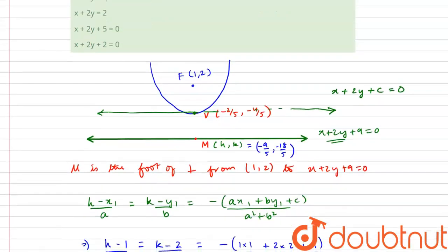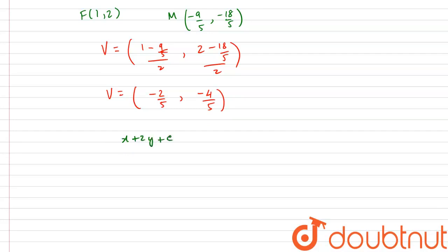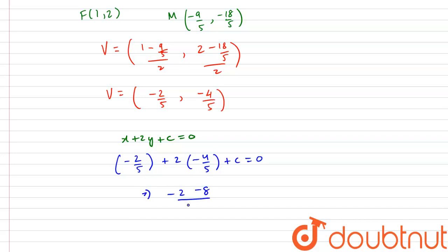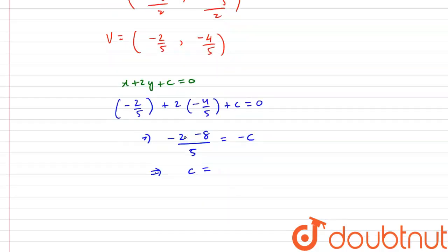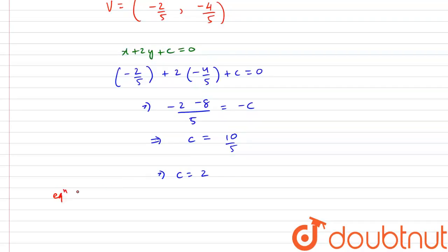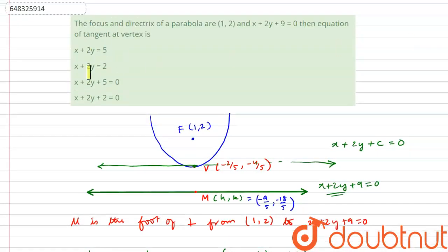Substituting vertex V = (−2/5, −4/5) into x + 2y + c = 0: −2/5 + 2×(−4/5) + c = 0, which gives −2/5 − 8/5 + c = 0, so −10/5 + c = 0, meaning c = 2. Hence the equation of the tangent at the vertex is x + 2y + 2 = 0, which corresponds to option 4.